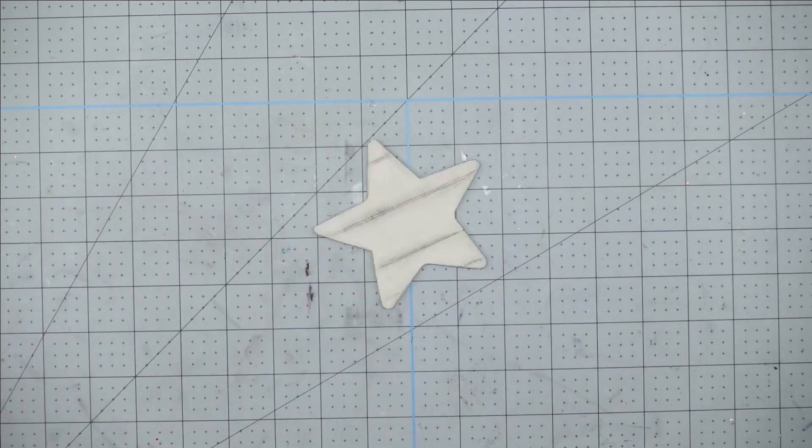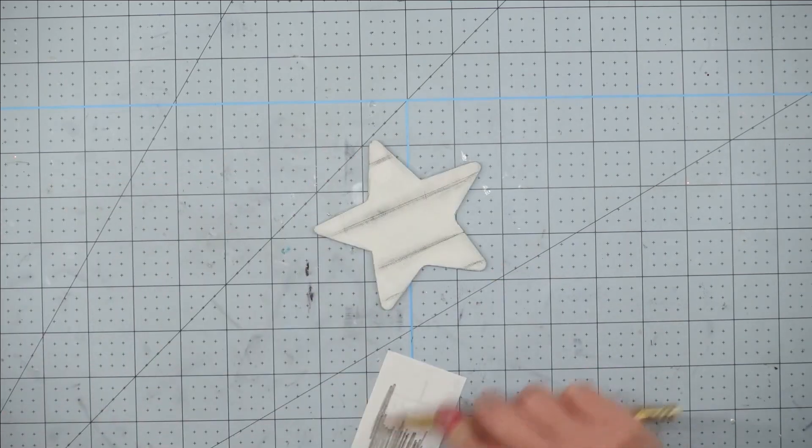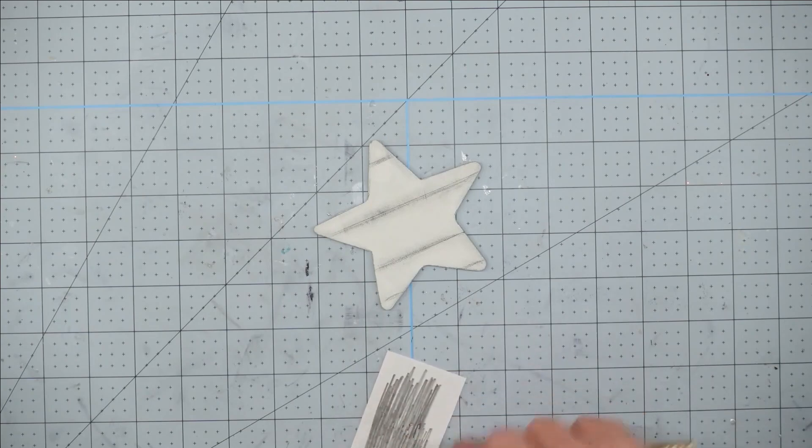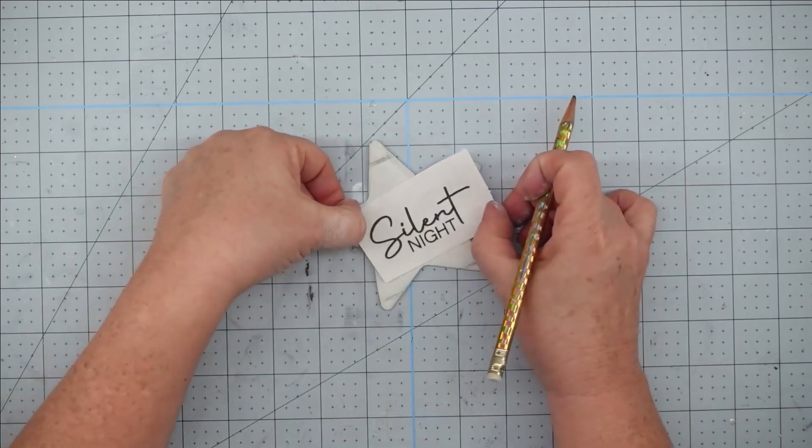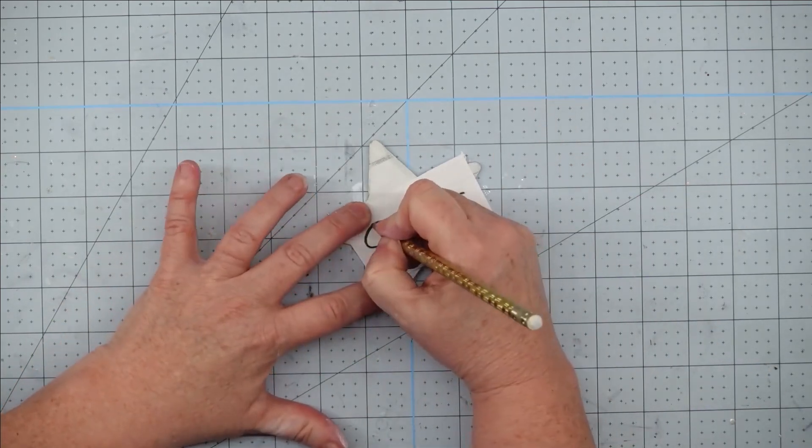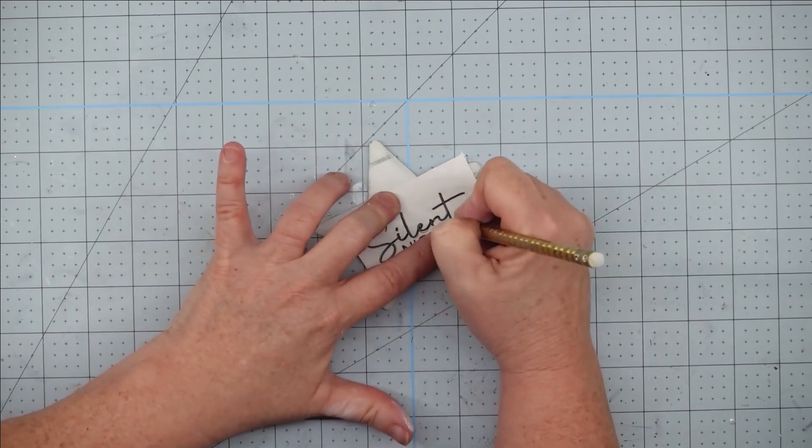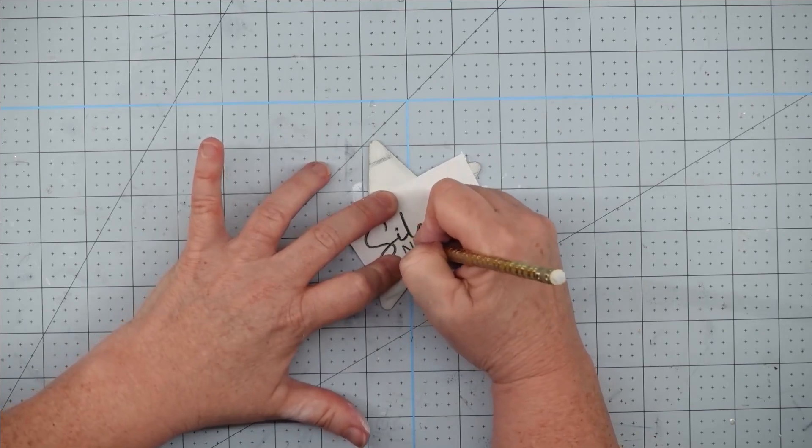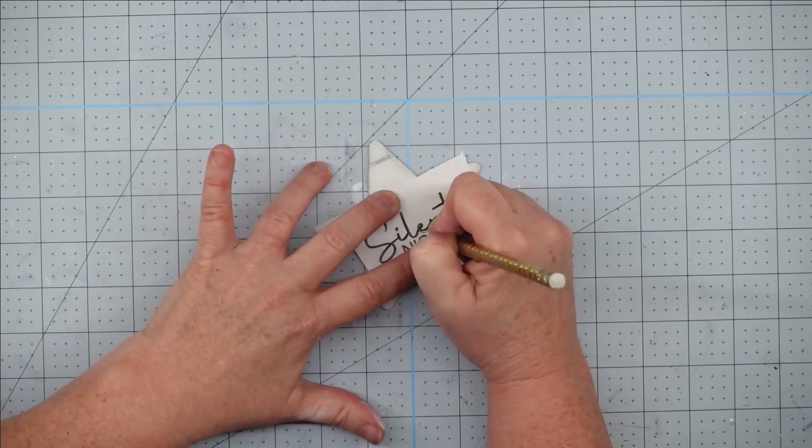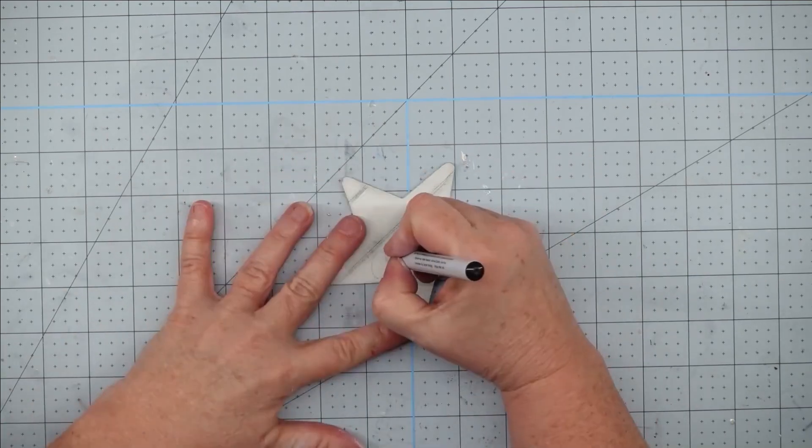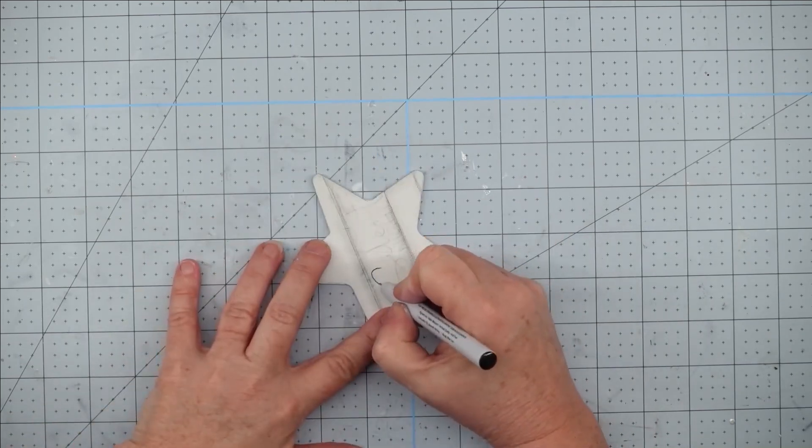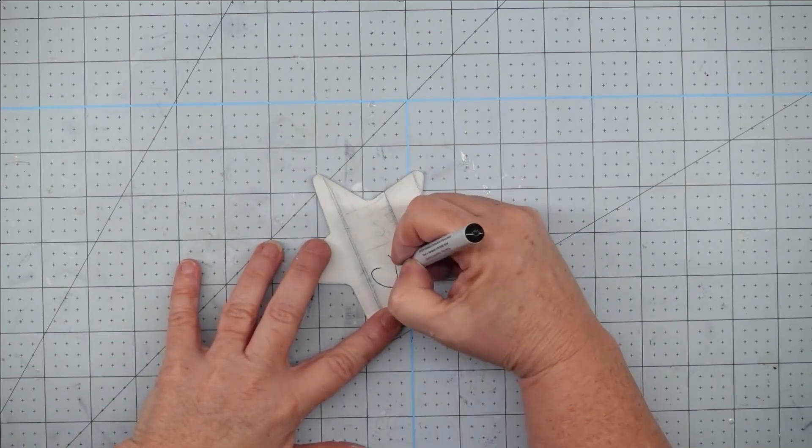To do the wording for my ornament, I cut it out and then I scribble on the back with my pencil. I lay it on my star where I want it to go and I trace over it. This is just going to transfer that wording to my project. Once I get my letters transferred, I come back in with a fine tip marker and fill it in.